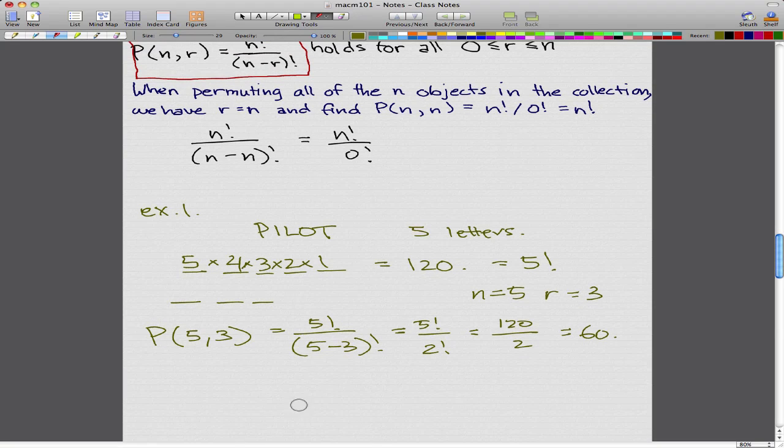The number of ways we can use these letters and the number of arrangements there are for r = 3 is 60. It can be like L-O-T or I-L-O or something like that. There are 60 different linear arrangements using these letters.